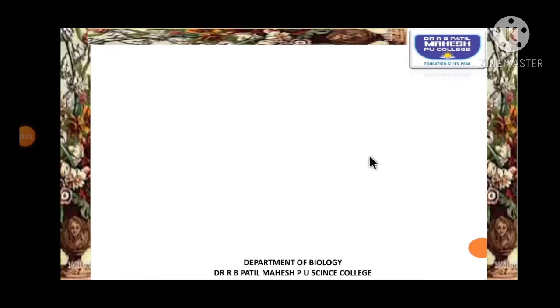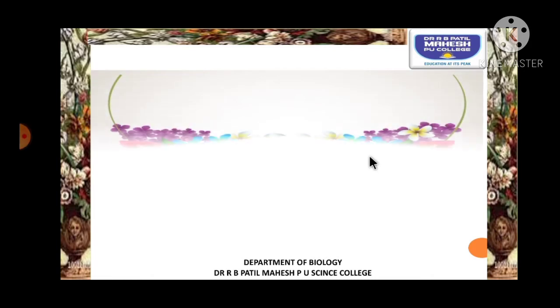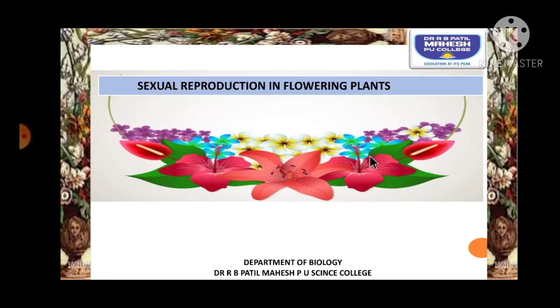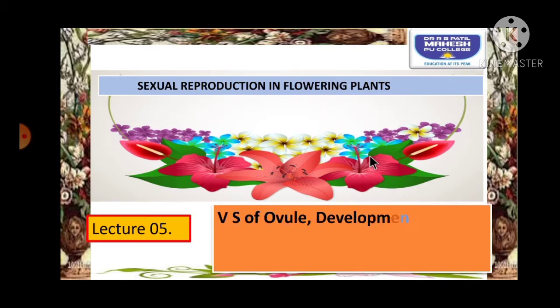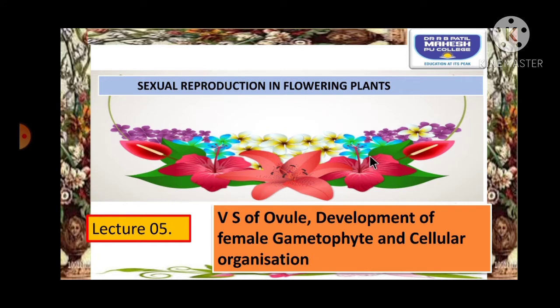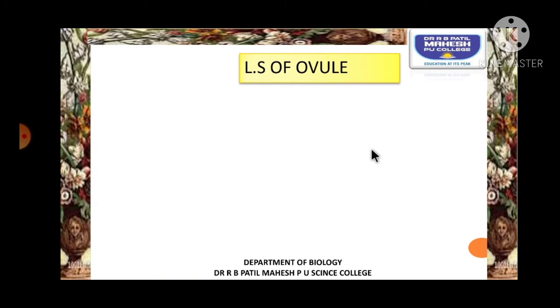Hello students, welcome back to the chapter sexual reproduction in flowering plants. Today in this lecture we are going to discuss important concepts like vertical section of the ovule, development of the female gametophyte, and the cellular organization inside the embryo sac.